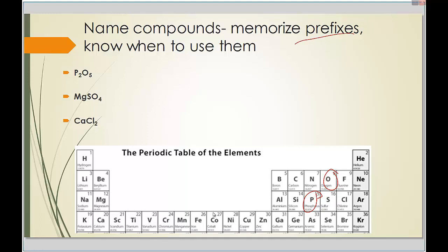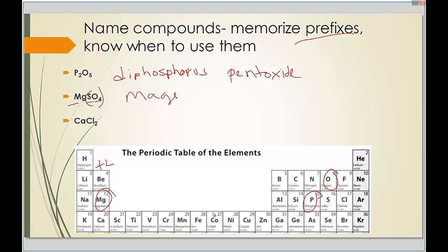For P₂O₅ — both non-metals, so use prefixes. Two is 'di,' giving diphosphorus. Five is 'penta,' giving pentaoxide. The name is diphosphorus pentaoxide. For MgSO₄ — magnesium is plus two from the periodic table, so no Roman numerals. More than two capital letters means a polyatomic ion — SO₄ is sulfate. The name is magnesium sulfate.